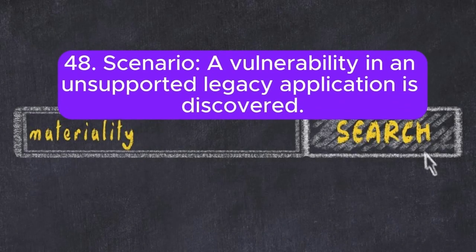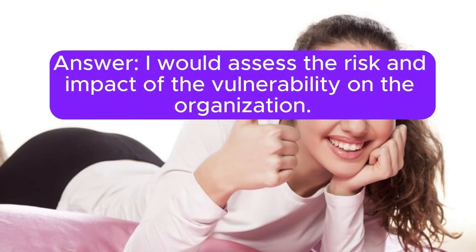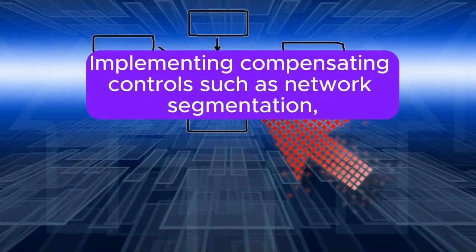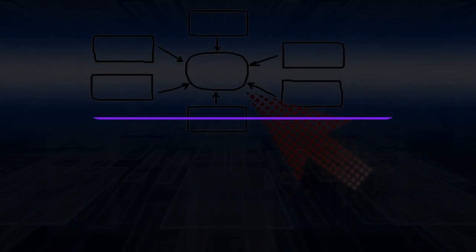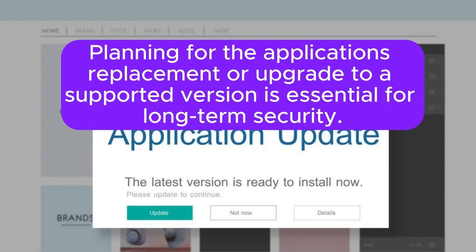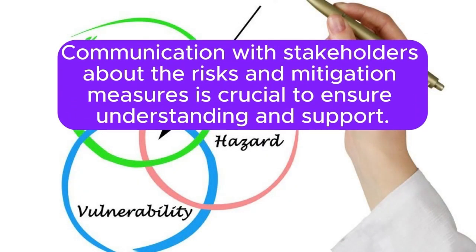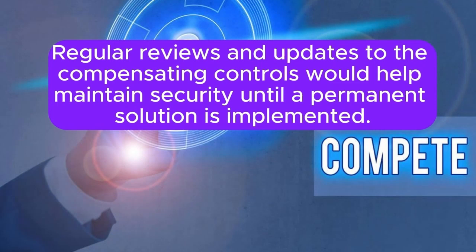Scenario 48: A vulnerability in an unsupported legacy application is discovered. How do you address this? I would assess the risk and impact of the vulnerability on the organization. Implementing compensating controls such as network segmentation, strict access controls, and enhanced monitoring would help mitigate the risk. Planning for the application's replacement or upgrade to a supported version is essential for long-term security. Communication with stakeholders about the risks and mitigation measures is crucial to ensure understanding and support. Regular reviews and updates to the compensating controls would help maintain security until a permanent solution is implemented.